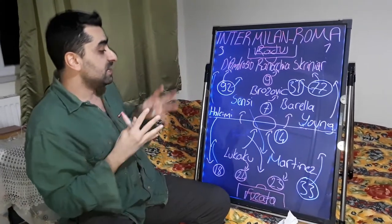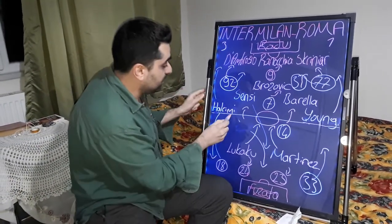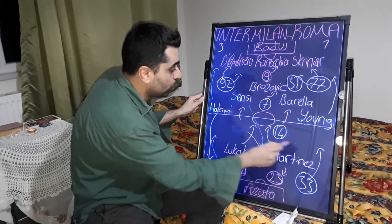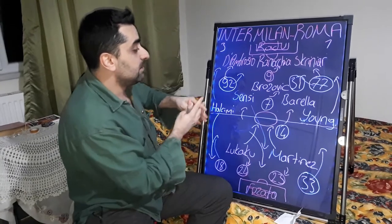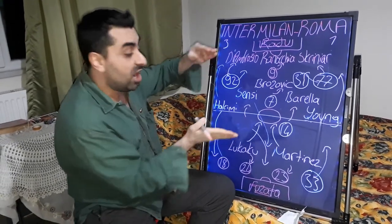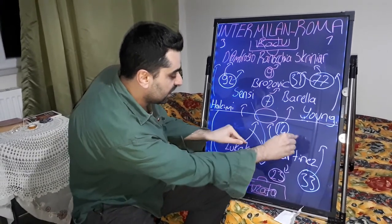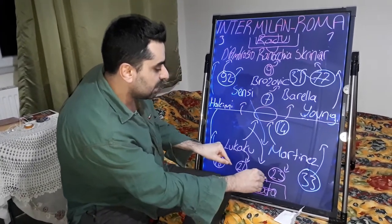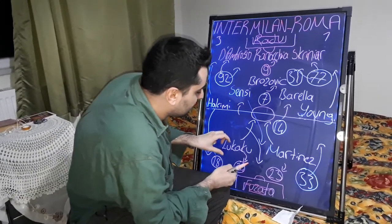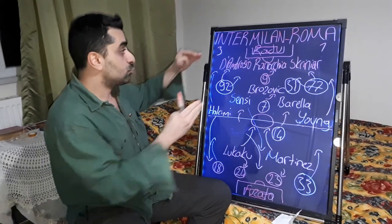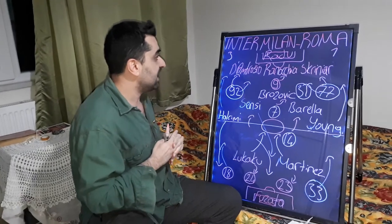Inter developed a counter-attack with Hakimi and Lukaku. Hakimi moved to the left wing and carried the ball forward. Roma had pushed up high as a team, and Lukaku got into the penalty area. Hakimi brought the ball from the left, and with his assist, Lukaku scored the goal. The score was 3-1 with this goal, and Inter won 3-1 against Roma.